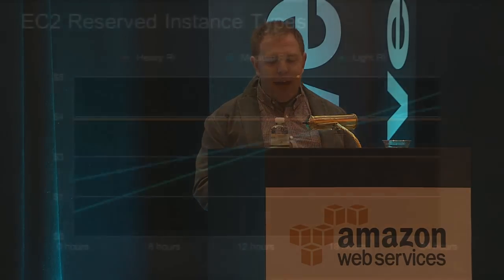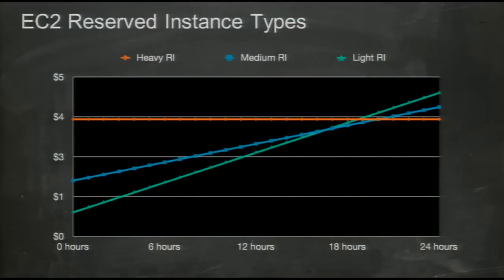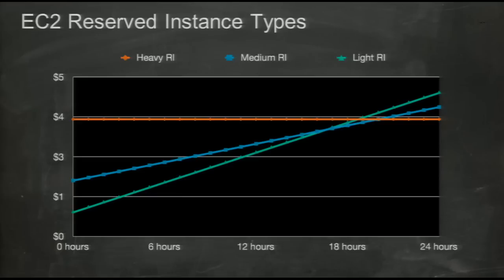When you buy reserved instances, you have an option of buying heavy, medium, or light instances. The heavy instance requires a bigger upfront payment but has a much lower hourly cost. The light instance has the lowest upfront payment and lowest financial risk, but a higher hourly cost. They're all a lot cheaper than paying by the hour, but if you're running something 24 hours a day — like databases or caches — then heavy reserved instances make the most sense. If you're running it just a few hours a day or for a site that gets traffic mainly on weekends, light reserved instances often help out. The medium is cheaper than the others for roughly 18 to 19 hours a day of usage.